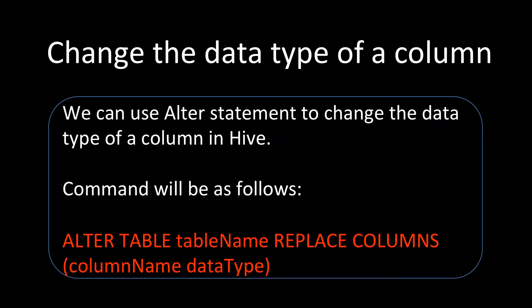In Hive we can use the ALTER statement to change the data type of a column. This is a data definition language operation — we alter the table, then alter the column name and data type. The command is: ALTER TABLE table_name REPLACE COLUMNS (column_name new_data_type). That way we can change the data type of a specific column in Hive.